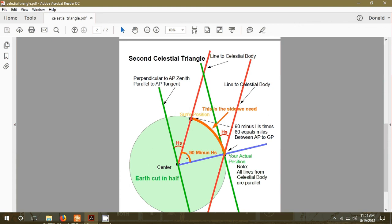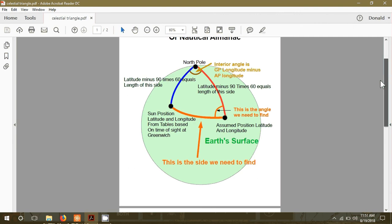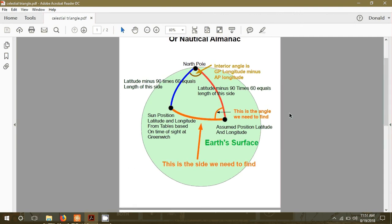Remember, on Earth, angles are the same as distance. 1 degree equals 60 miles. This orange line here is the exact same side as the orange one in the previous triangle. This is the actual distance from me to the Sun. Now I know exactly how long this side is, and I can compare it to the answer I got using the celestial tables, knowing that my sight measurement is correct.